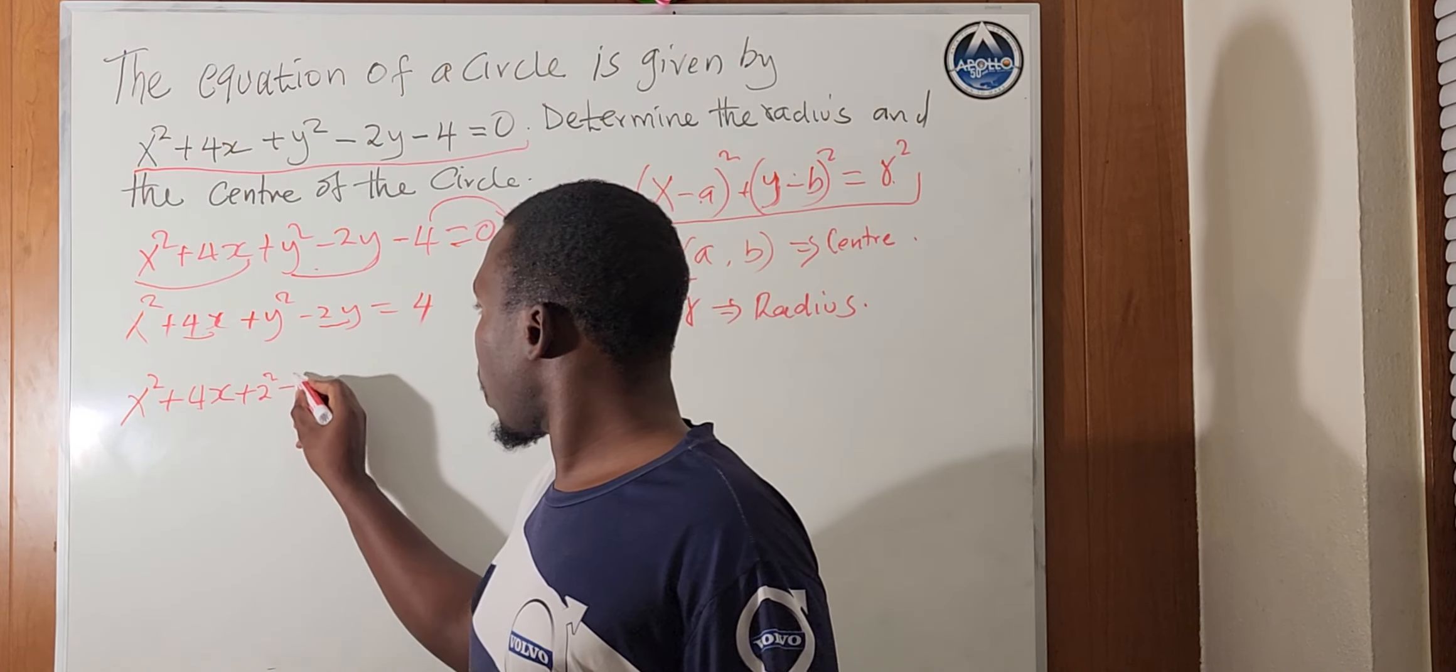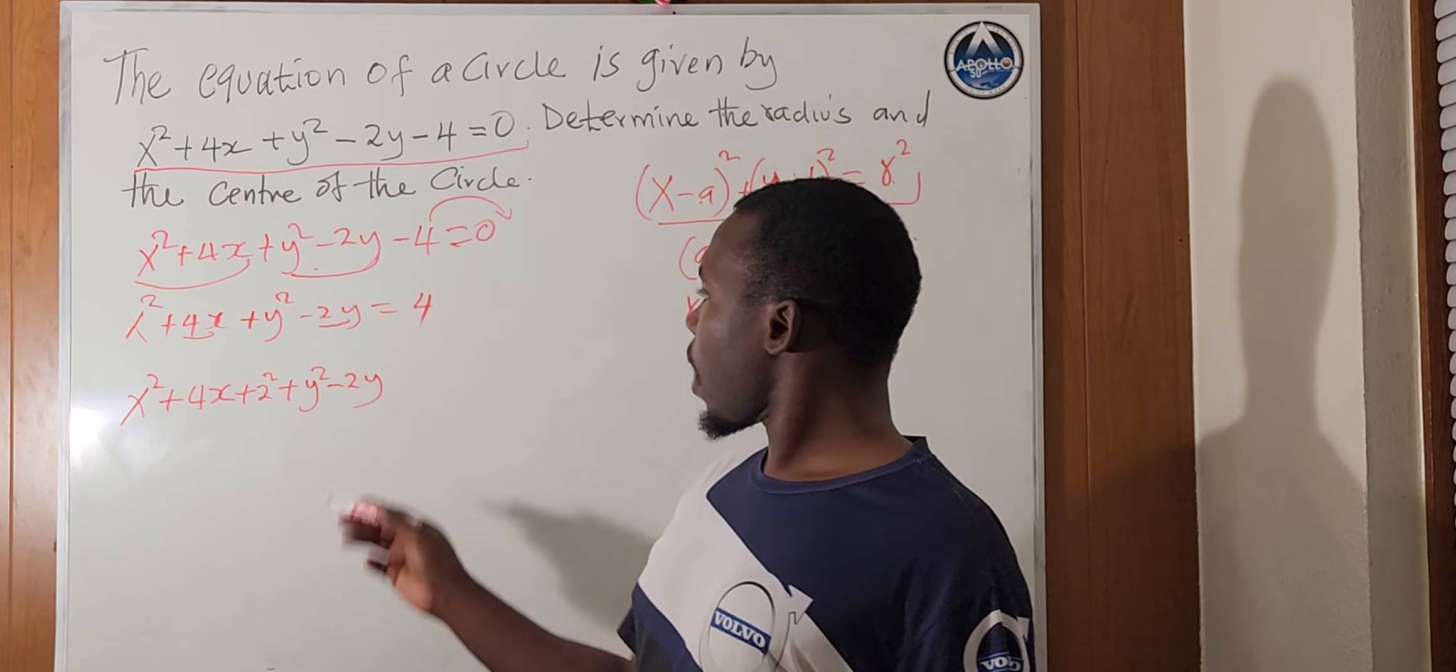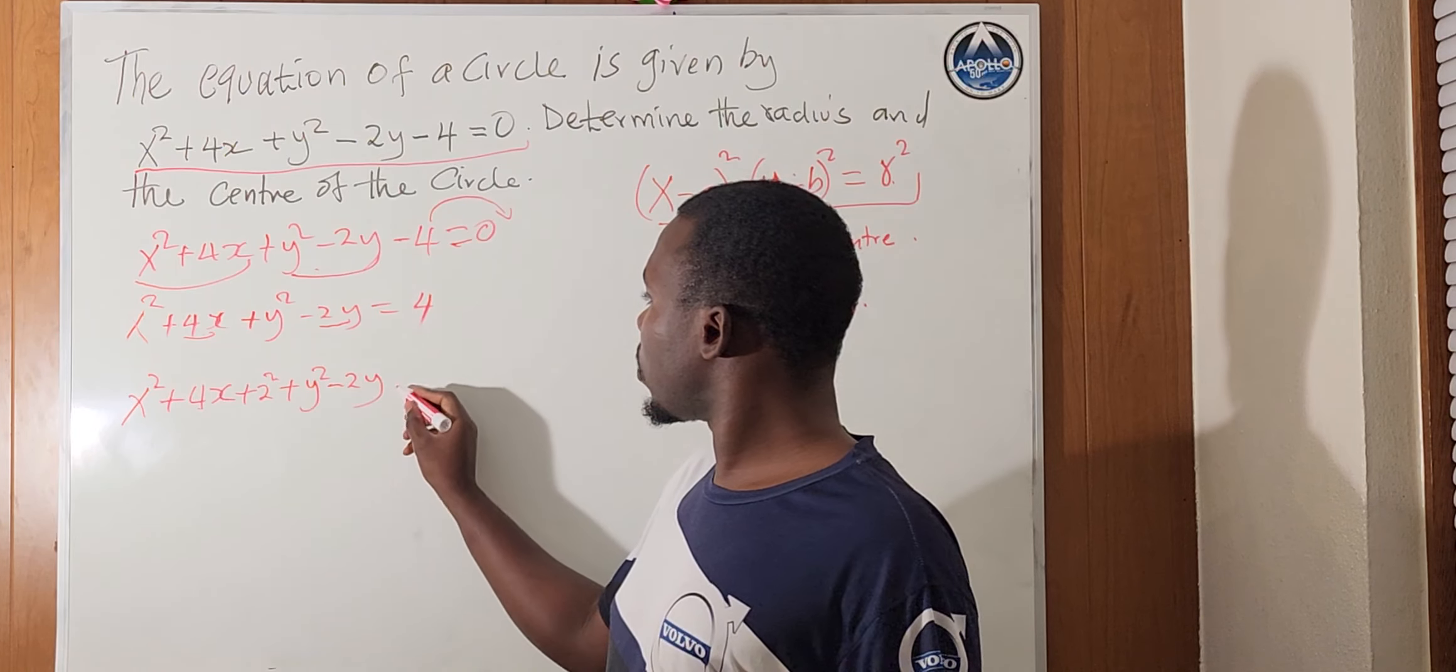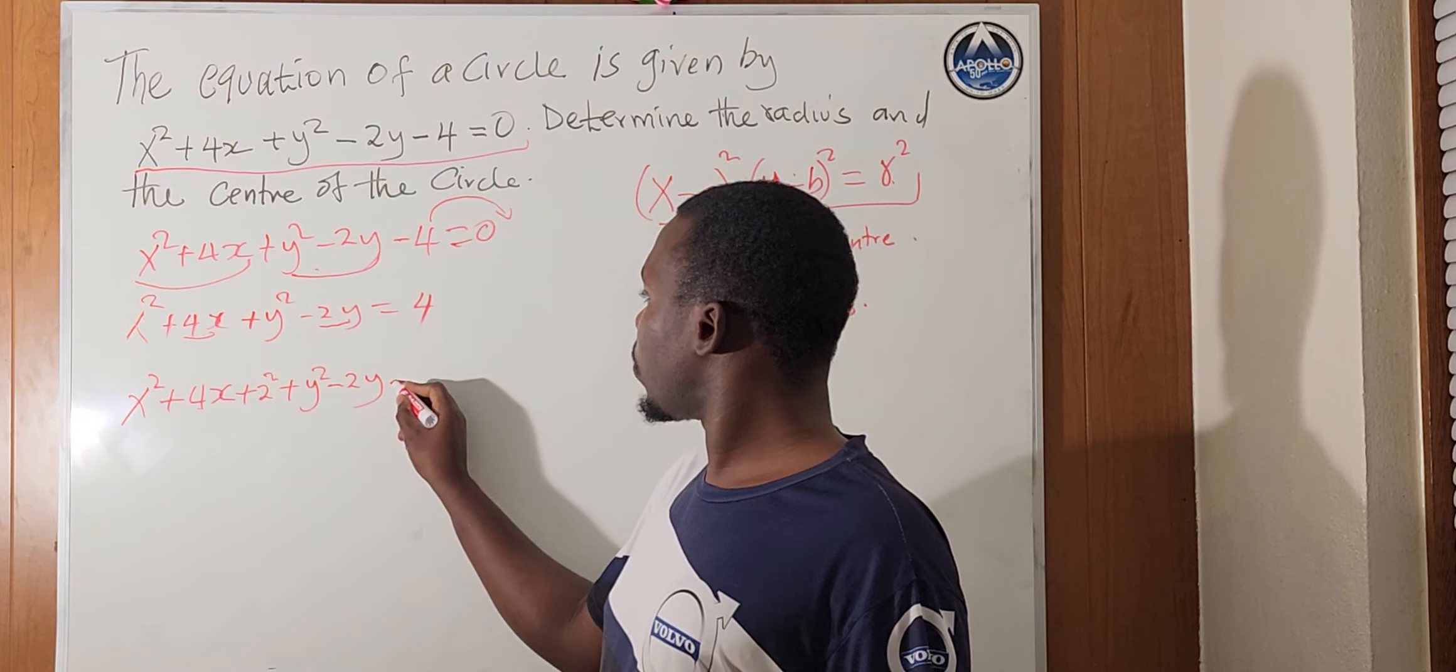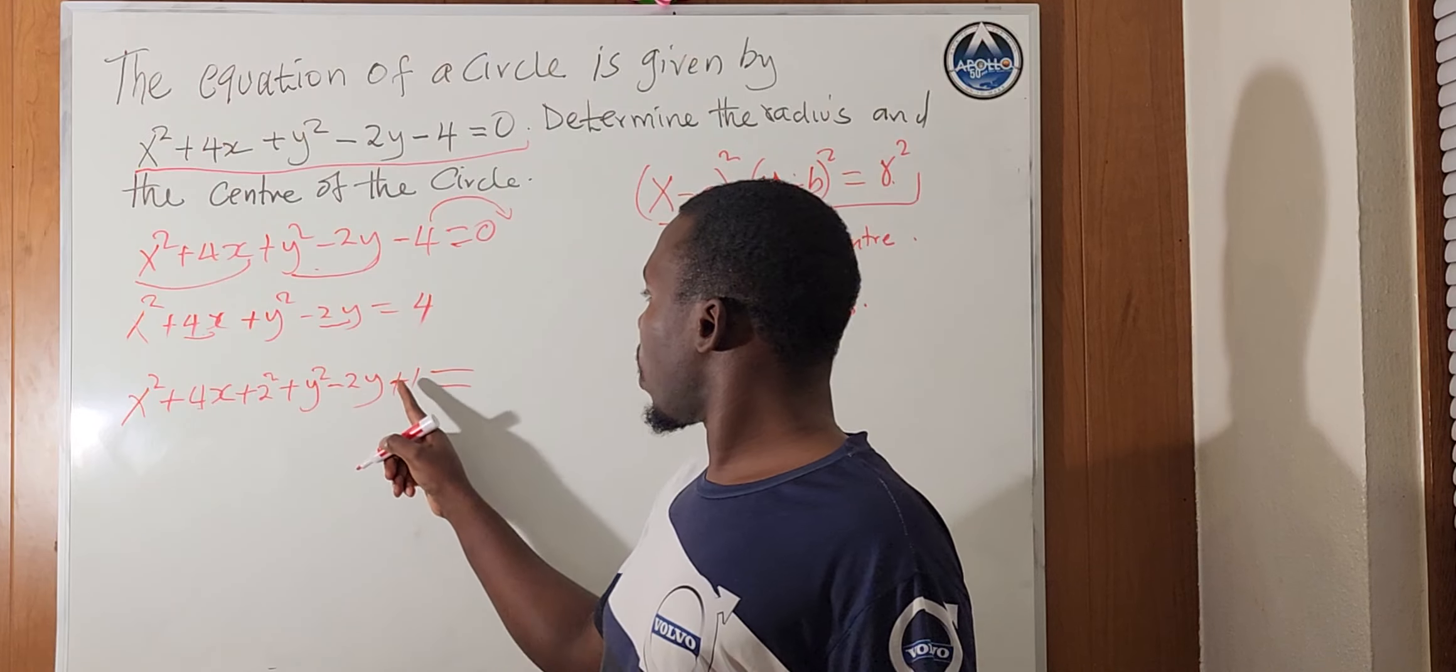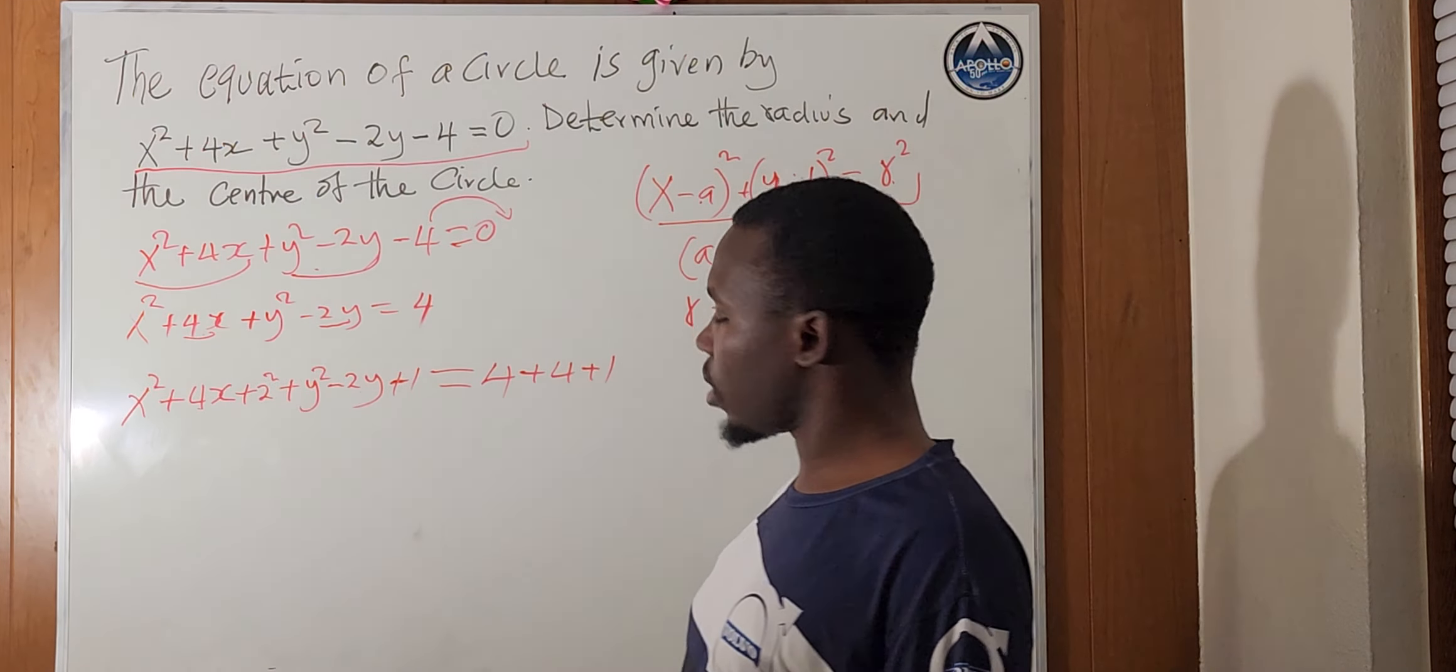Then we continue plus y squared minus 2y, half of minus 2, that is minus 1, minus 1 squared here, it will give you plus 1. Then, since we have added 4 and 1 on the right-hand side, on the left side, so on the right side, we have 4, we also add 4 plus 1 here.